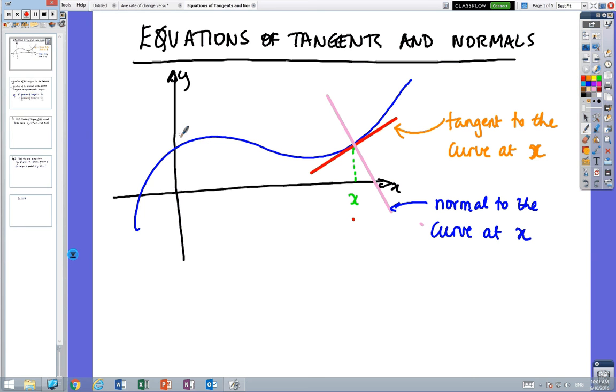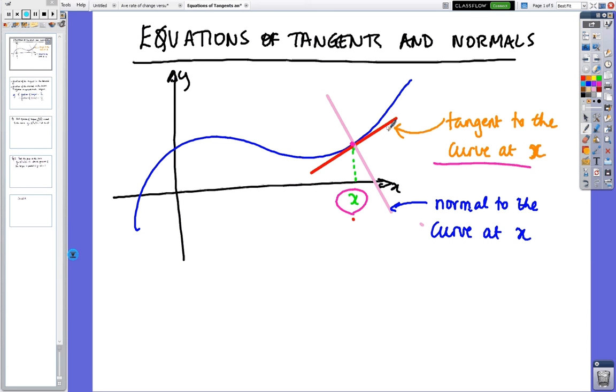Okay, so we're now looking at using the derivative to actually find some things like equations of tangents and normals. So just to remind you, I've got a certain point x, and at x there's going to be a tangent, and a tangent looks like that red line, and the normal is the line that meets the tangent at a right angle. So normal meets the tangent at a right angle.